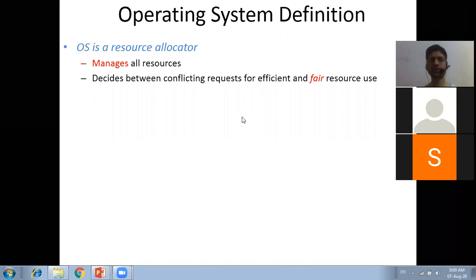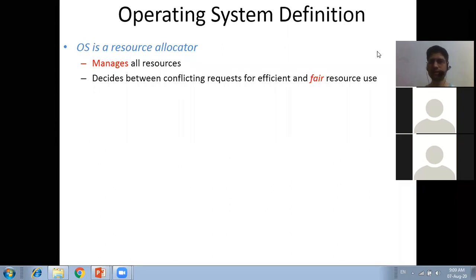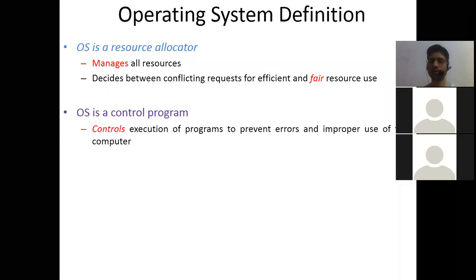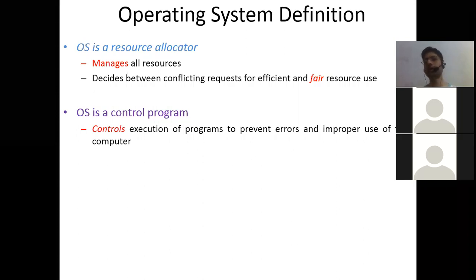The operating system is a resource allocator - it manages all resources and decides between conflicting requests for efficient and fair resource use. The operating system is also a control program. Why is it called a control program? Because it controls the execution of programs to prevent errors and improper use of the computer.